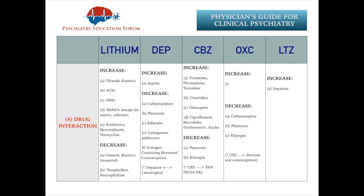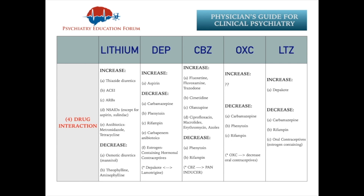Oxcarbazepine can decrease oral contraceptives' effectiveness, so importance of having the patient educated on this and having alternative contraceptive options discussed. Next is regarding lamotrigine. Level can be increased with Depakote, as we already talked about. And it can be decreased by carbamazepine, rifampin, and oral contraceptives. Antivirals like lopinavir and ritonavir can also reduce lamotrigine levels.